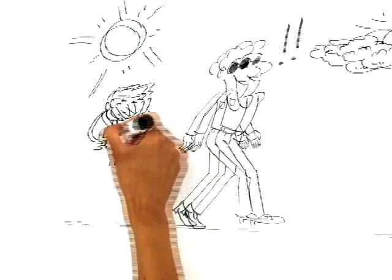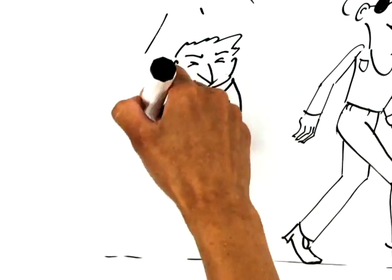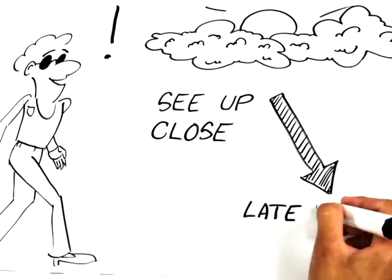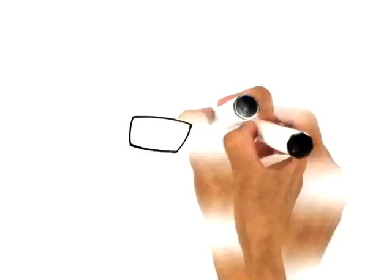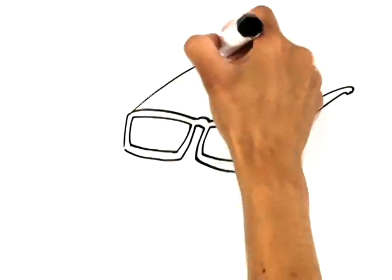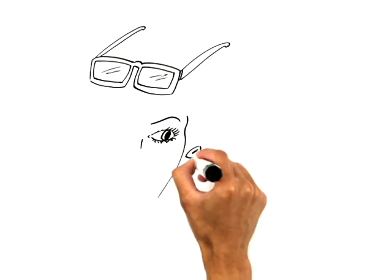One of the things that people notice the most is their reading vision. So usually around the late 30s or early 40s, the ability to be able to see up close, especially in dim lighting, tends to deteriorate. This is a very normal progression and it typically occurs because of focusing ability of the eye.